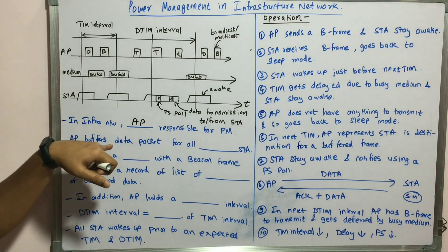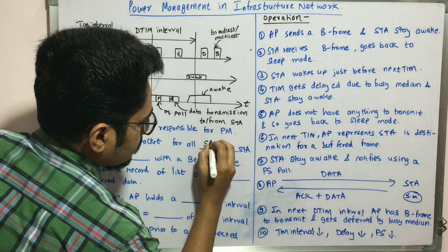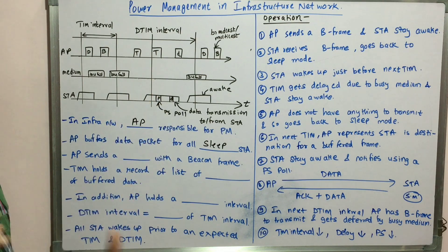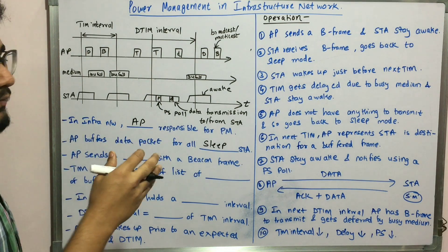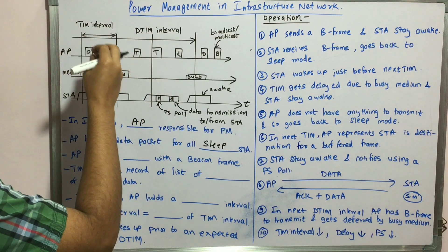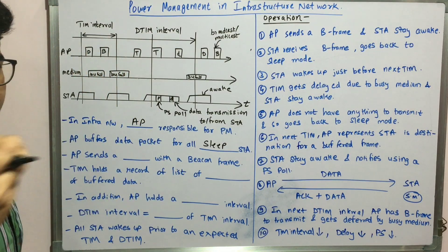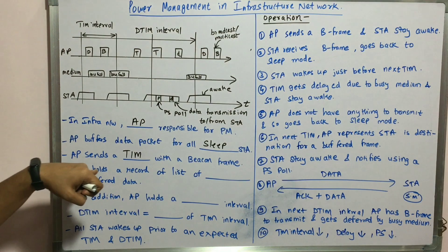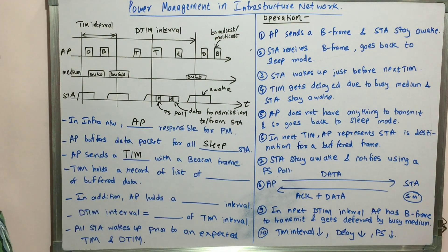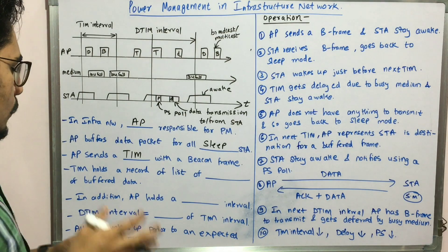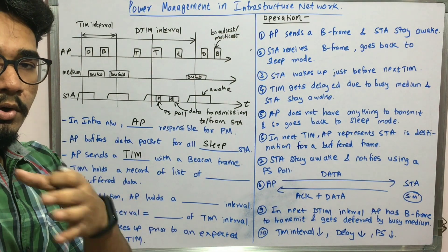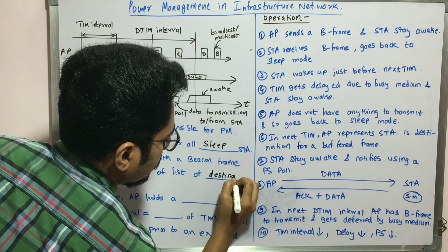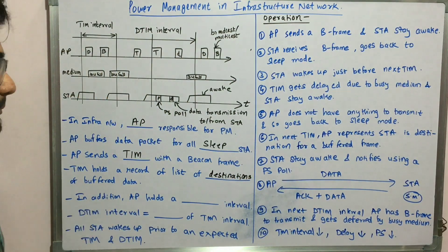The access point buffers data packets for all stations which are sleeping. The access point also sends a TIM — traffic indication map — with a beacon frame. The TIM holds a record or list of destinations for the buffered data, meaning it tracks where all the buffered data needs to be sent.